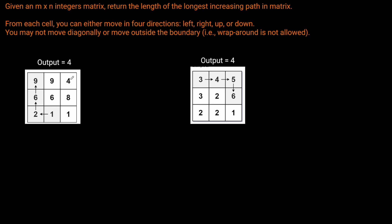For each position in the matrix we need to try all possible paths we can take. We can cut off the search immediately once we see we can't go any further. For example, if we start at this nine and go to the adjacent nine and see that value is not greater than the previous value, then we simply back out of searching because it's not a valid path.